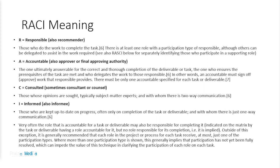Very often, the role that is accountable for a task or deliverable may also be responsible for completing it, as shown in the matrix. Outside of this exception, it is generally recommended that each role in the project or process for each task receive at most just one of the participation types, so that we stop passing the buck. Where more than one participation type is shown, it generally implies that participation has not yet been fully resolved, which can impede the value of this technique in clarifying the participation of each role on each task.